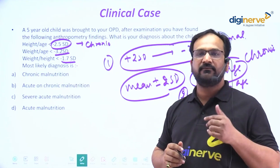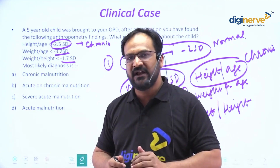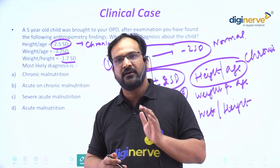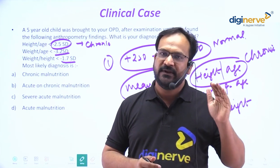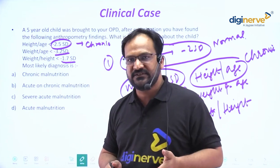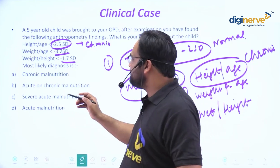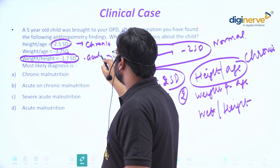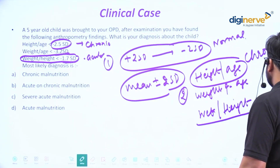Now we have two remaining things: weight-for-age and weight-for-height. Weight-for-height means a person who got a good height, but after getting that height the patient has low weight. It means previously the patient was better — they were gaining height — but due to some circumstances they are not getting nutrition. So weight-for-height is a criteria of acute malnutrition.